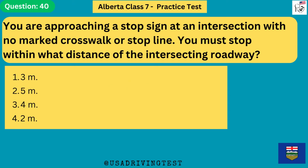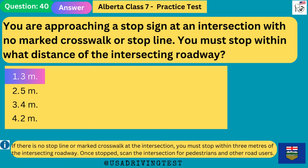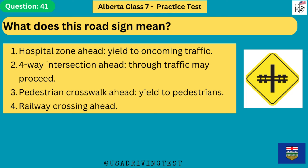You are approaching a stop sign at an intersection with no marked crosswalk or stop line. You must stop within what distance of the intersecting roadway? 1. 3 meters. 2. 5 meters. 3. 4 meters. 4. 2 meters. The answer is 1: 3 meters. If there is no stop line or marked crosswalk at the intersection, you must stop within 3 meters of the intersecting roadway. Once stopped, scan the intersection for pedestrians and other road users.